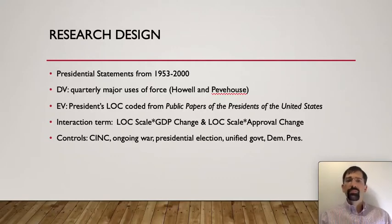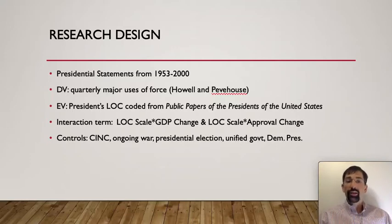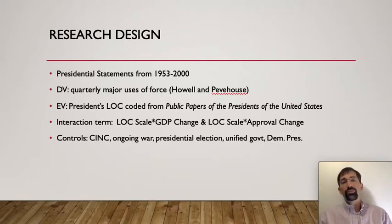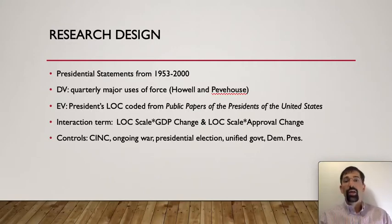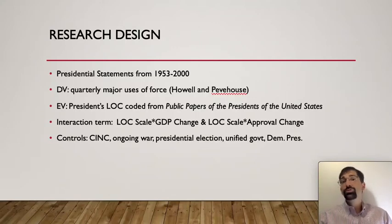The time sample is 1953 to 2000, and data is quarterly. There is an interaction term based on GDP change and approval change. Think back to Benjamin Fordham's piece — it is not Republican or Democrat's direct effect on using force, not direct partisanship, but the interaction between elite preferences and the mass public. When those two preferences don't align, different partisan presidents will choose action.